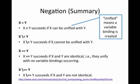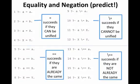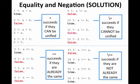What 'can be unified' means is: at some point in the future, could there be a consistent set of variable bindings where variable X is equal to variable Y? With these descriptions, you should pause and see if you can predict what these should print in Prolog. Hopefully most are pretty intuitive once you think through whether they could be unified or are already the same.